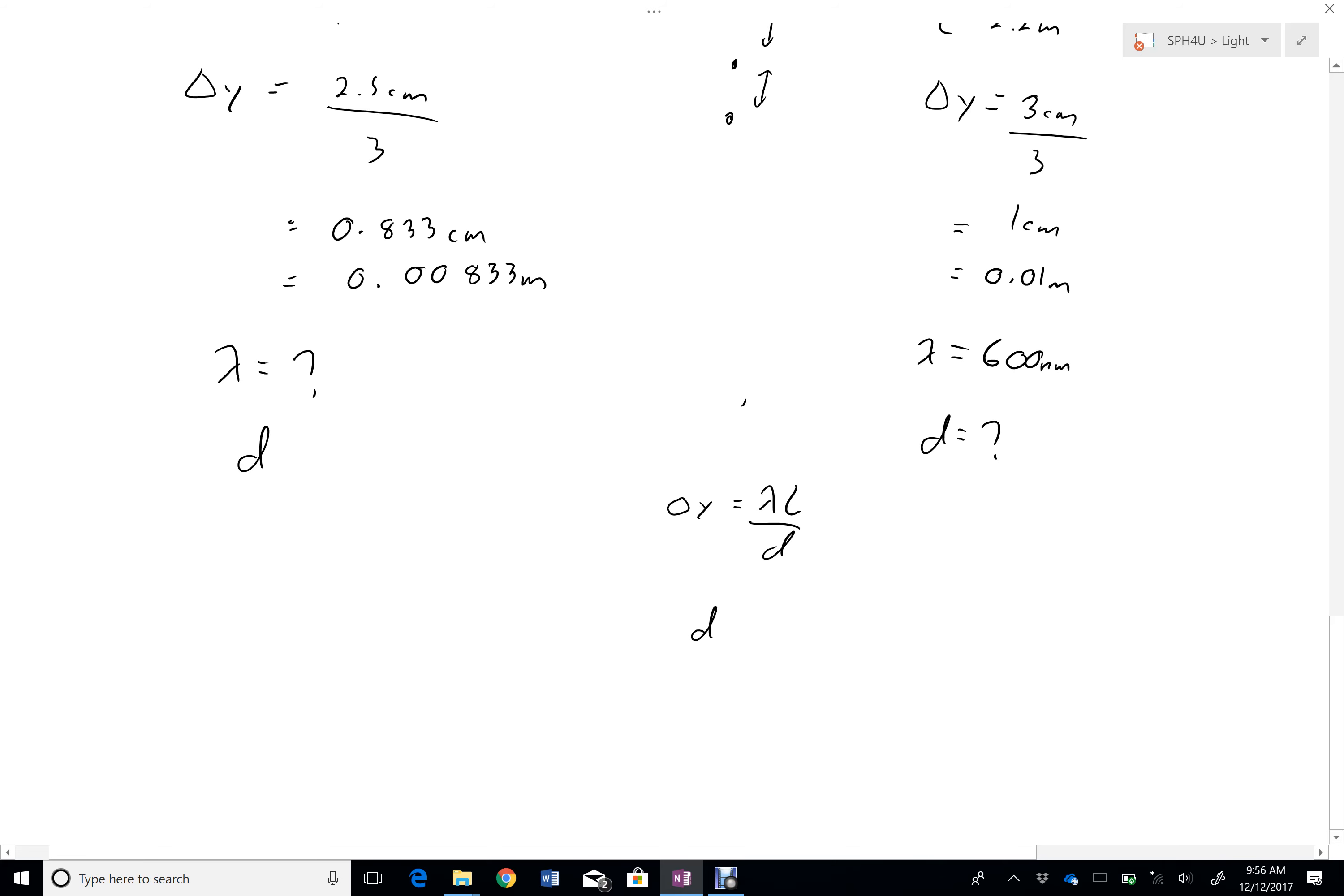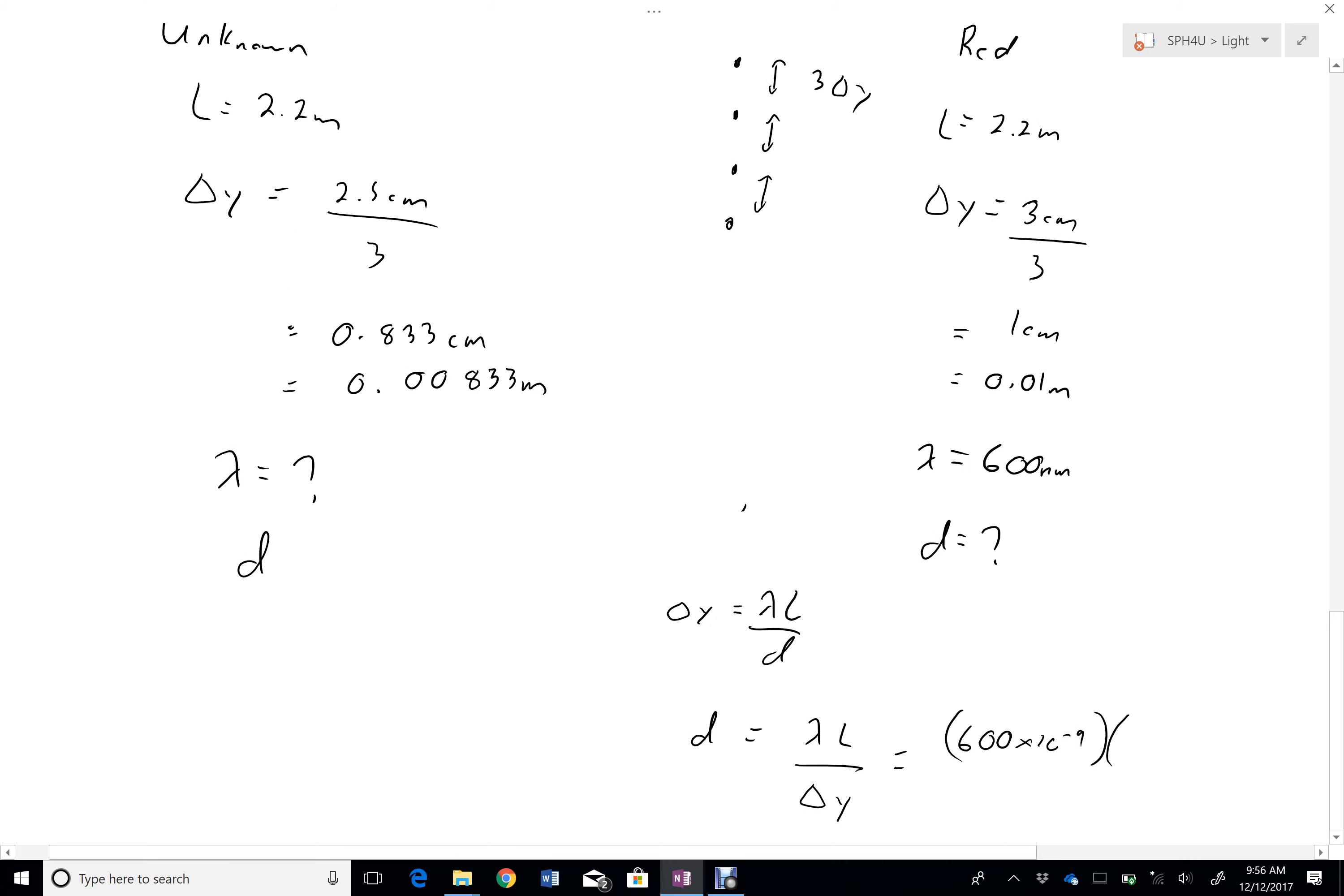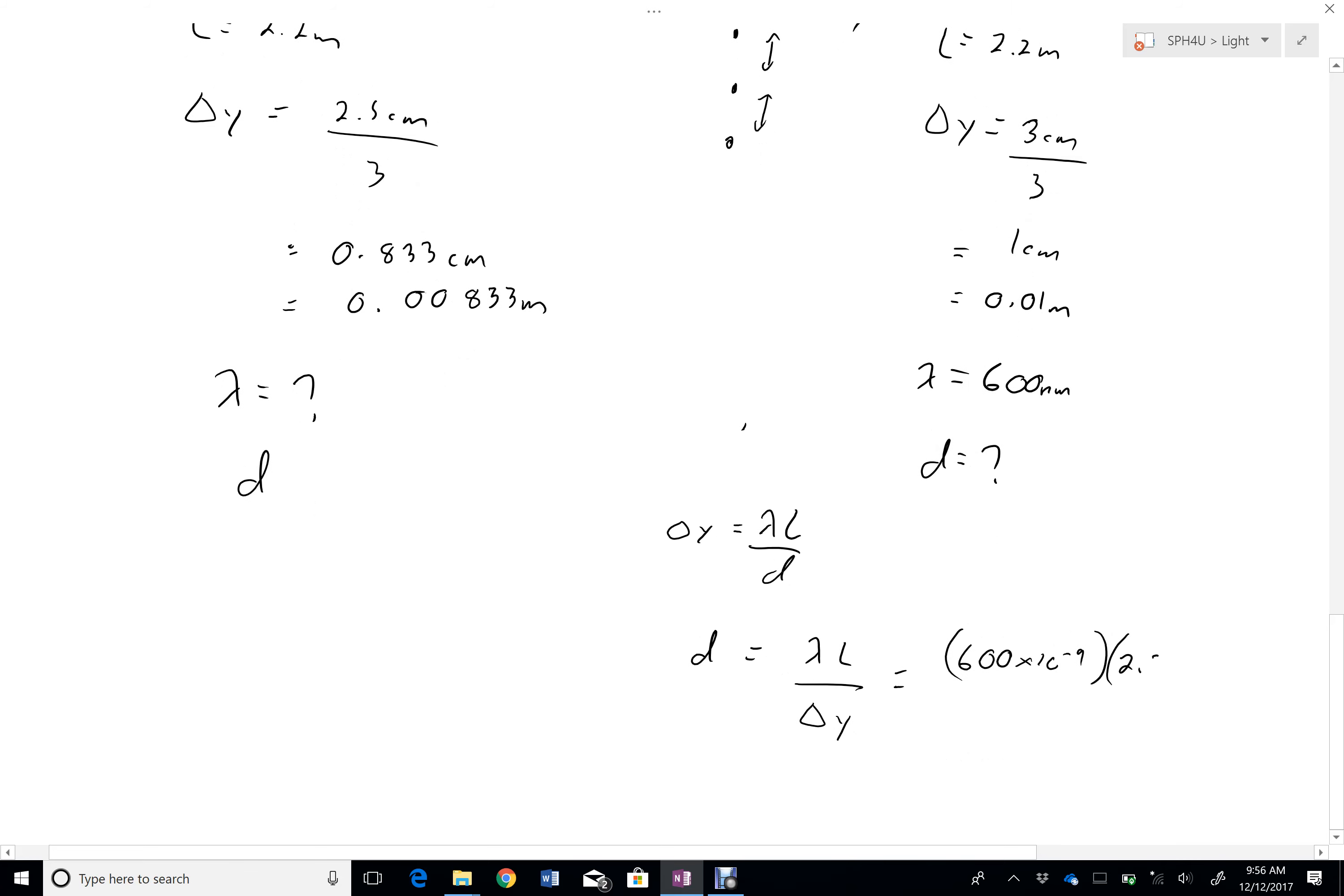So, multiplying both sides by D, I get D to the top over here, and that's going to be lambda L over delta Y. So I'll just substitute here. 600 times 10 to the negative 9, times my L, 2.2, divided by my delta Y, which was 0.01.